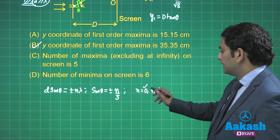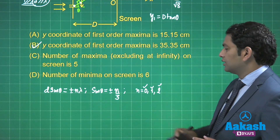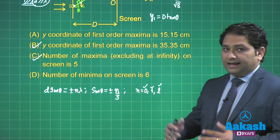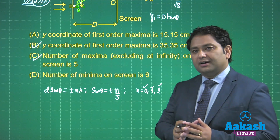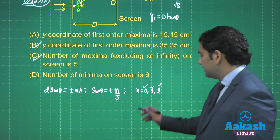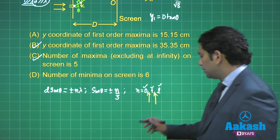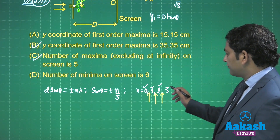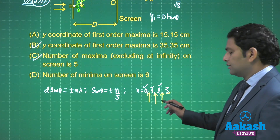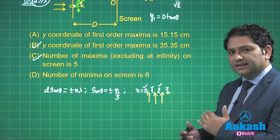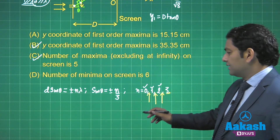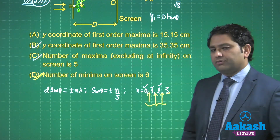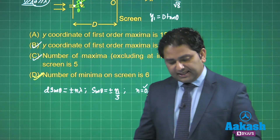Counting: central maxima is one, first maxima up and down gives two more, next two gives two more — so five maxima in total, making option c correct. For minima: one minima on each side between n=0 and n=1, one between n=1 and n=2, and one more between n=2 and n=3 (which corresponds to 90°) — so three minima on the upper half and three on the lower half, giving six total minima. Options b, c, and d are correct.